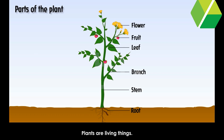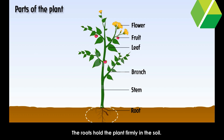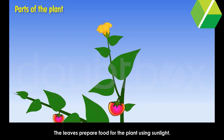Plants are living things. They cannot move from one place to another. The roots hold the plant firmly in the soil. Plants need air, soil, water and sunlight. The leaves prepare food for the plant using sunlight.